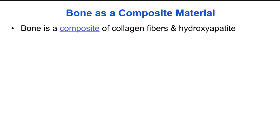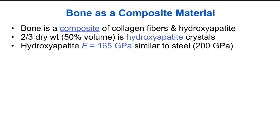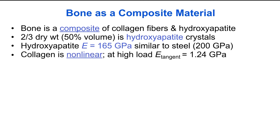Bone is a composite of collagen fibers and hydroxyapatite crystals. Two-thirds of the dry weight, about 50% of the volume, is the hydroxyapatite mineral crystals. The Young's modulus of hydroxyapatite is approximately 165 gigapascals, similar to that of steel at about 200 gigapascals. However, hydroxyapatite is very brittle, so it's not as strong as steel. Collagen is non-linear and can undergo relatively high strains, but even at high load, its Young's modulus is only one-hundredth that of hydroxyapatite.